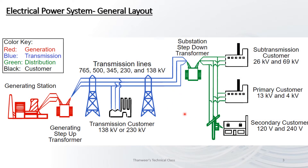A generator station generates electricity. We are not using 11 kV directly — we step up to 132 kV, 220 kV, or 400 kV. The transmission goes from 110 kV or 138 kV through the transmission lines to a substation.